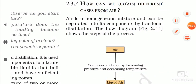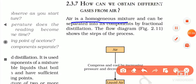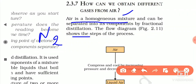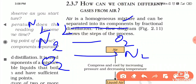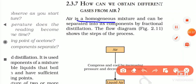Air is a homogeneous mixture. This means we cannot see nitrogen present in air separately from oxygen, or oxygen separately from nitrogen. We cannot even distinguish the different components by looking at it. Air is a homogeneous mixture because it does not have visible boundaries.